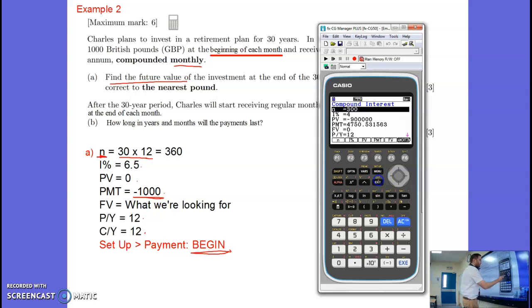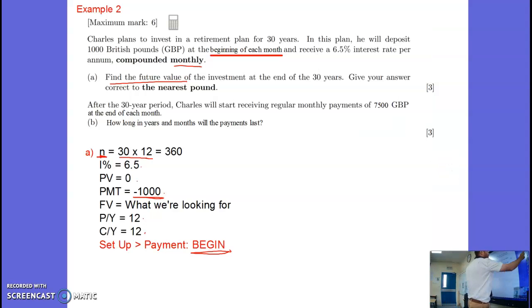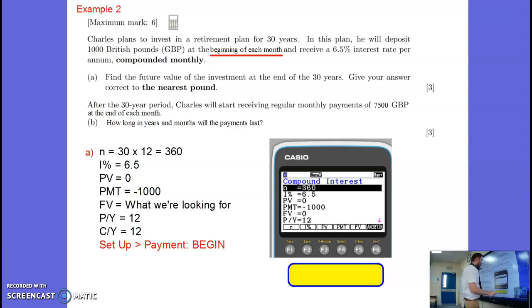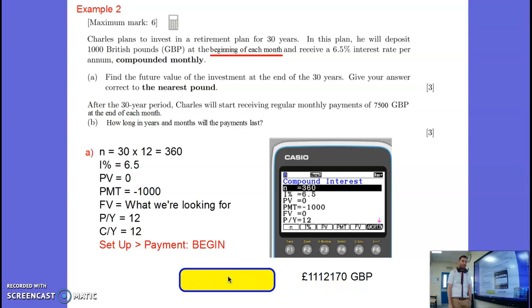So knowing this setup part is there is very important. So I'll just show you that again. I'm going to go shift and then above menu is setup. And then payment, I can change from end to beginning. Okay. Then when I go back in here, let's put all of that information in. And in fact, I've done that in advance. So quicken it up. So put all that information in, put begin as the payment place, and you get £1,112,170.